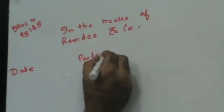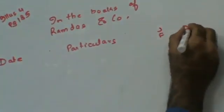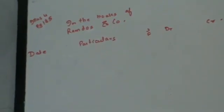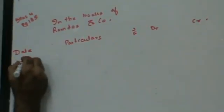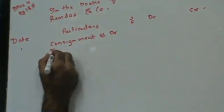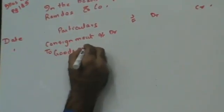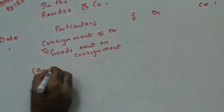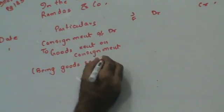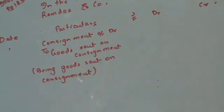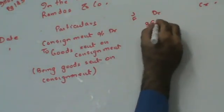Take particulars, GF, debit, credit. Ramdas and Company consigned goods, so this is consignment account debit — debit the receiver. Consignment is the receiver. To goods sent on consignment. Being goods sent on consignment. 50 bales at 700 each: 50 × 700 = 35,000.